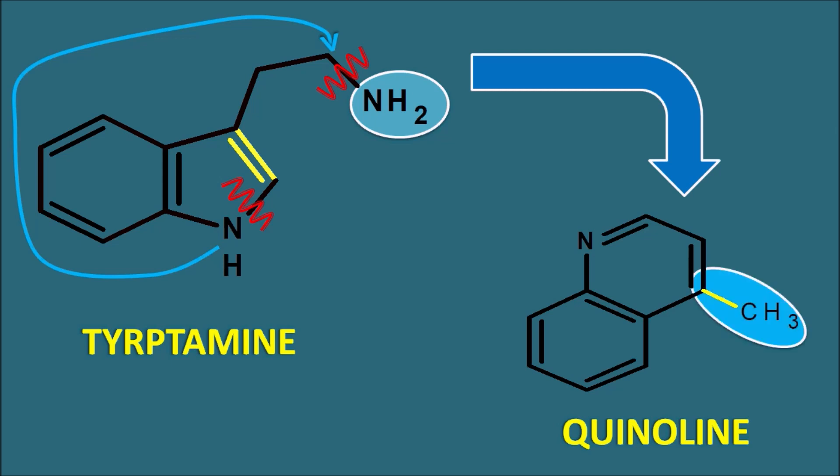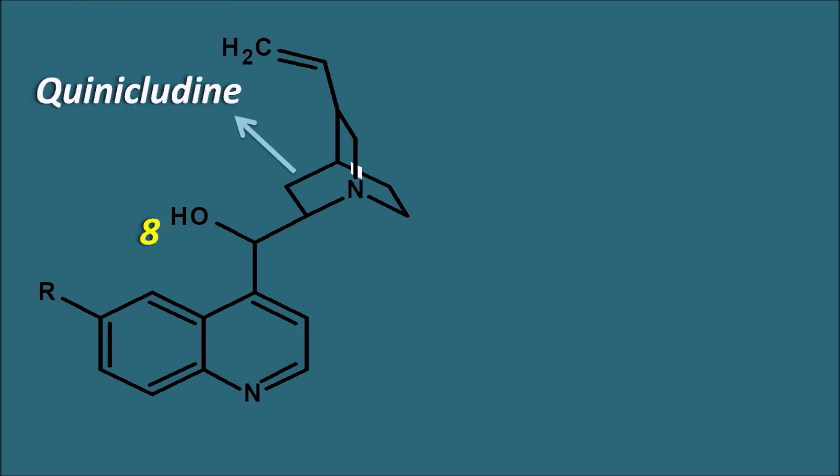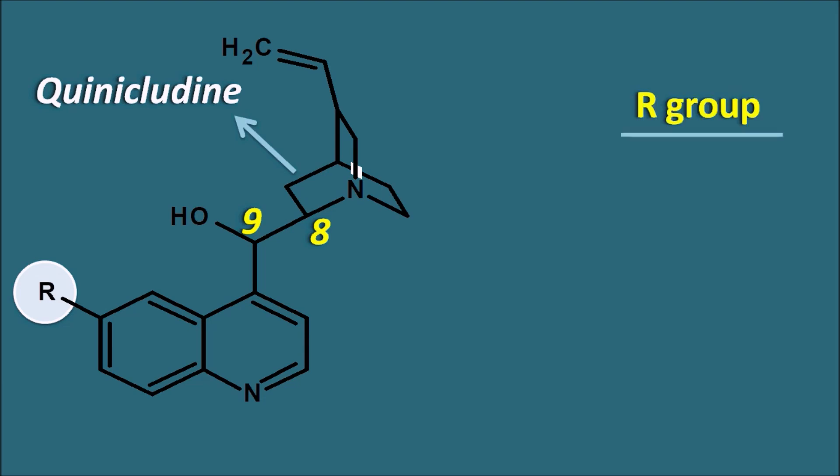Quinoline alkaloids are mainly the cinchona alkaloids — the quinoline nucleus is present in the cinchona alkaloids. In cinchona, the quinoline ring system is attached with a methanol group, so they are called quinoline methanols. This methanol is attached to a bicyclic ring system called quinuclidine. The 8th and 9th positions are chiral carbons, therefore cinchona alkaloids exist as four types of stereoisomers. They also differ based on the R group attached at the 6th position of the quinoline ring system.